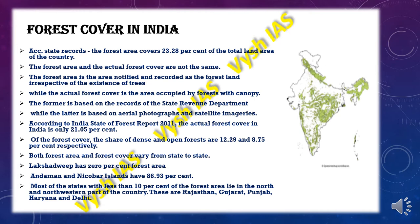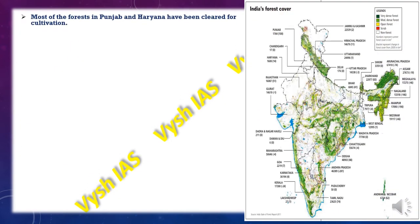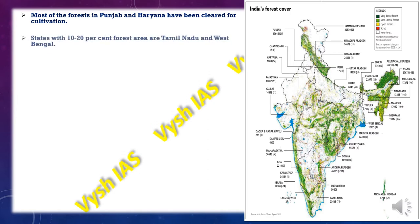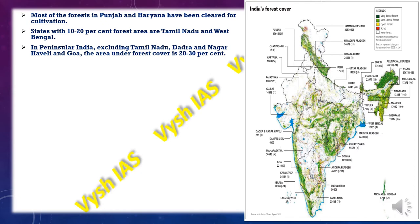Most states which have less than 10% of forest area lie in the north and northwestern parts of the country, like Haryana, Delhi, Rajasthan, Gujarat and Punjab. Most of the forests in Punjab and Haryana have been cleared for cultivation and irrigation purposes. States with 10 to 12% of forest area are found in Tamil Nadu and West Bengal.